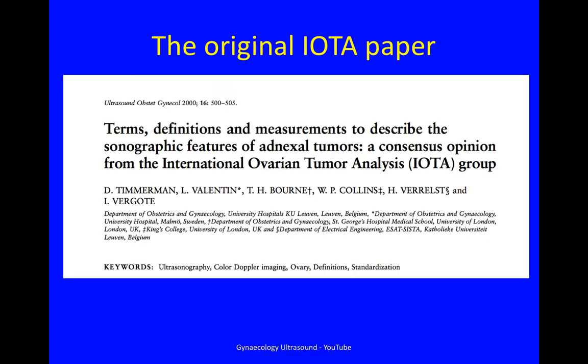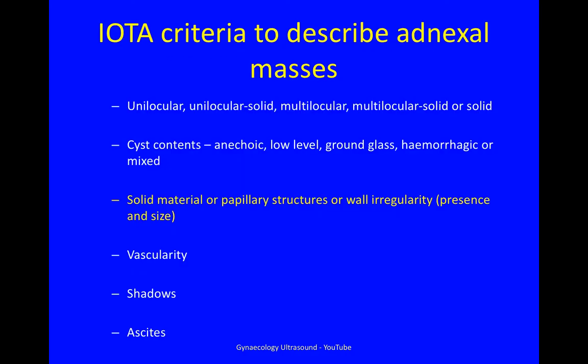This was their original paper from 2000, but there have been many more since. These are the different criteria used to describe adnexal masses. We're going to be talking about solid material, papillary structures, and wall irregularities.